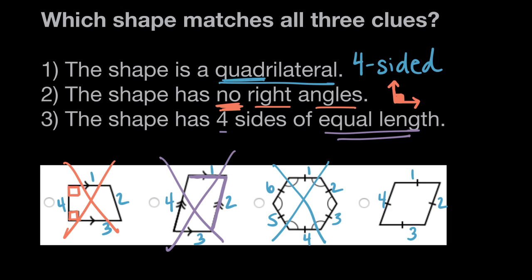But let's be sure this last one works. Here, the sides all look like they're the same length, but the way we can know for sure is these tick marks on shape four.